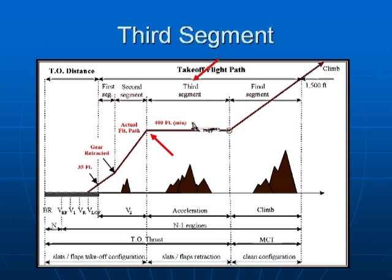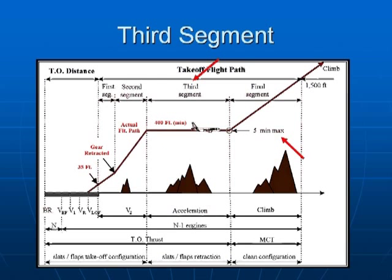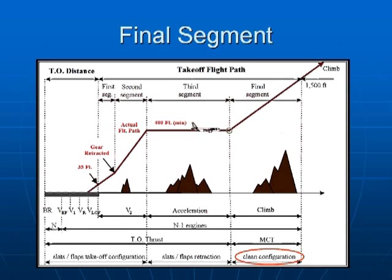Upon reaching the third segment, the aircraft is flown in level flight with the purpose of accelerating from V2 speed to climb speed, allowing the slats and flaps to be retracted. There is one constraint: the third segment must be completed within the time limitation for operating with takeoff thrust. Most aircraft have a limitation of 5 minutes, however some utilize 10 minutes. The time constraint begins at brake release and must be completed by the end of the third segment. Once the aircraft is in clean configuration, airspeed established at final climb speed, and thrust at max continuous, we begin the final segment.